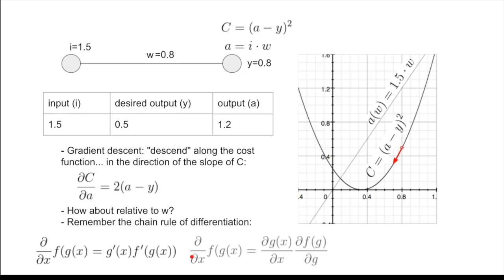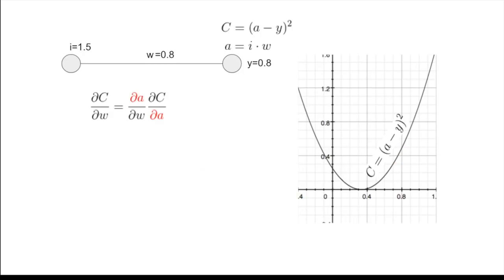Alright, so, what we're trying to find out is how much can we improve the situation, how much can we reduce the error by adjusting w. And we obtain this by finding out how much w affects the output activation, and how much the output activation affects the error function.